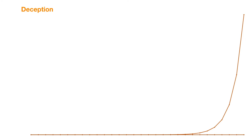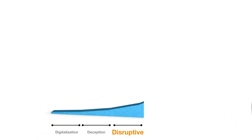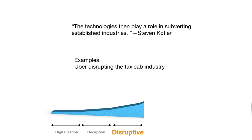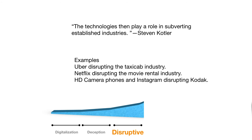They use the example of the digital camera: Kodak had the first digital camera in the 70s, but it didn't really break through until much later — about 20 or 30 years later, when digital photography was integrated into phones and basically obliterated companies such as Kodak. That's the disruption phase, where exponential technology works its magic and subverts established industries. Examples include Uber disrupting the taxi cab industry, Netflix disrupting the movie rental industry, and HD camera phones and Instagram disrupting Kodak and other film manufacturers.